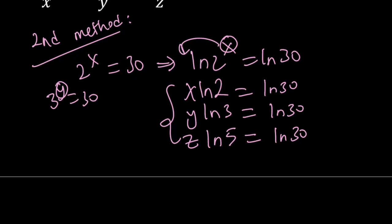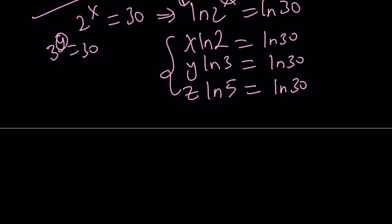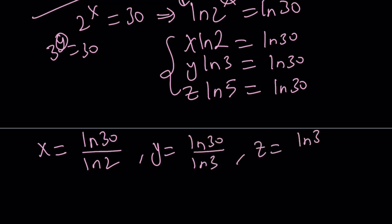Let's go ahead and isolate x y z from here because remember our goal is to find the sum of the reciprocals, so it makes sense if I isolate x y and z here. X can be written as ln 30 over ln 2. Y is ln 30 over ln 3, and z is ln 30 over ln 5.